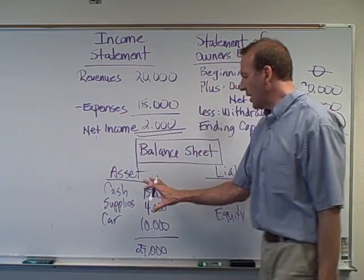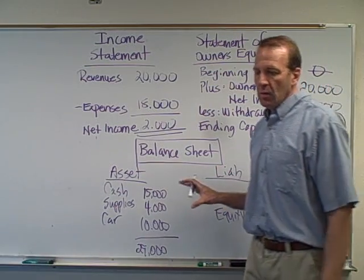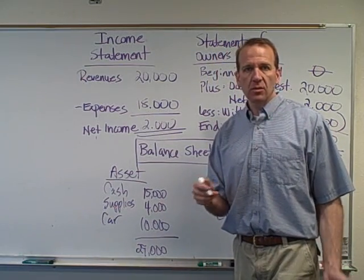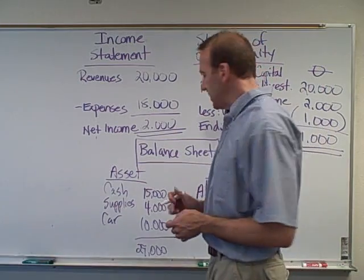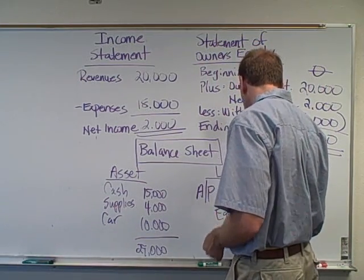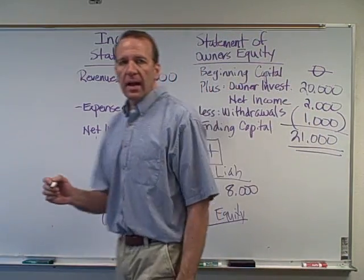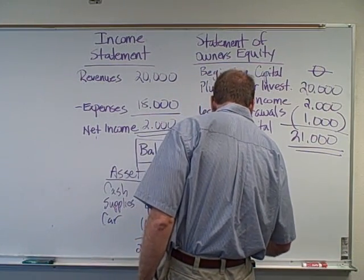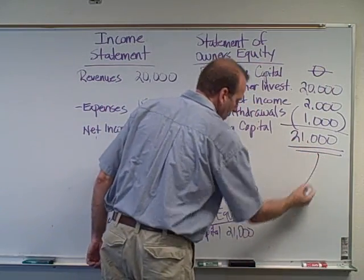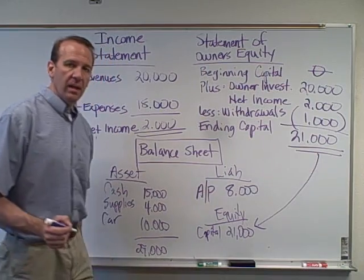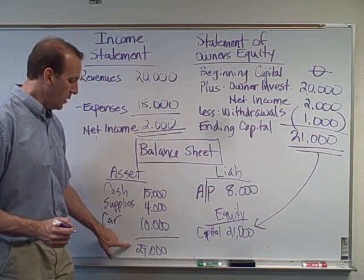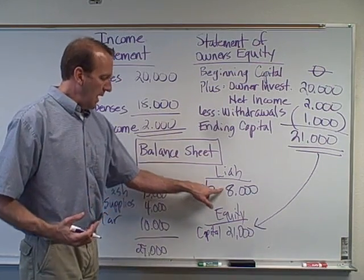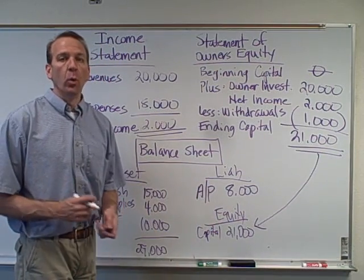This is called the balance sheet — the accounting equation — so the other side has got to balance. Let's say we only have one liability: A/P, which stands for accounts payable, the creditors we owe money to. Let's say the balance in accounts payable is $8,000. Our equity is our capital account, so capital has $21,000. So liabilities plus equity: 8 plus 21 equals $29,000. We're in balance.